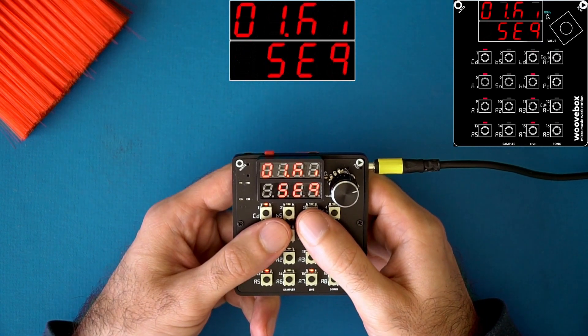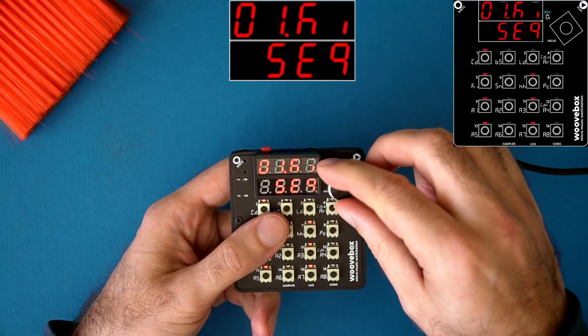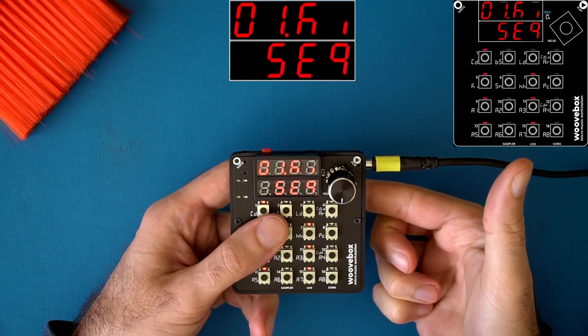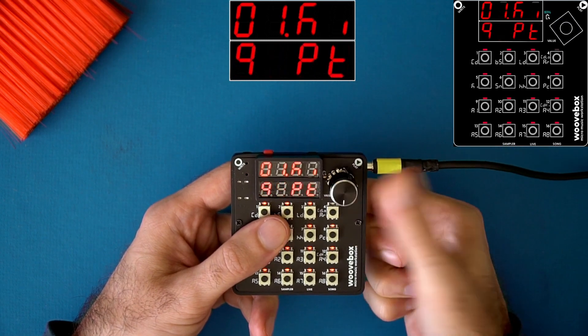Tip number two, you can quickly go back to the sequencer from any of the sequencer pages by just clicking the encoder. And if you want to get back to where you were, you can click it again.